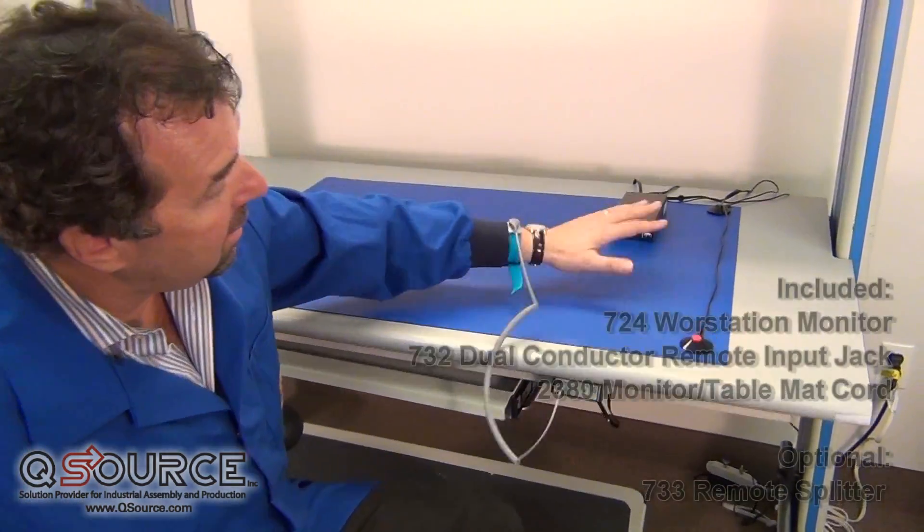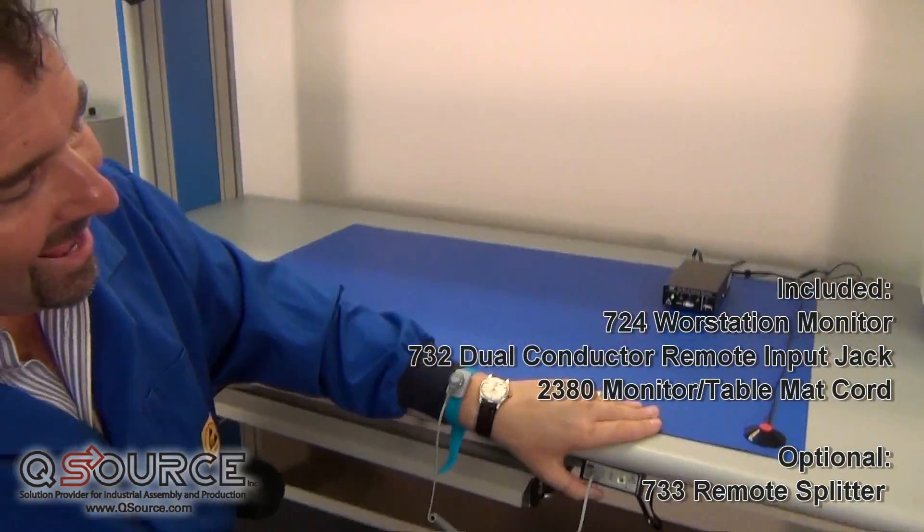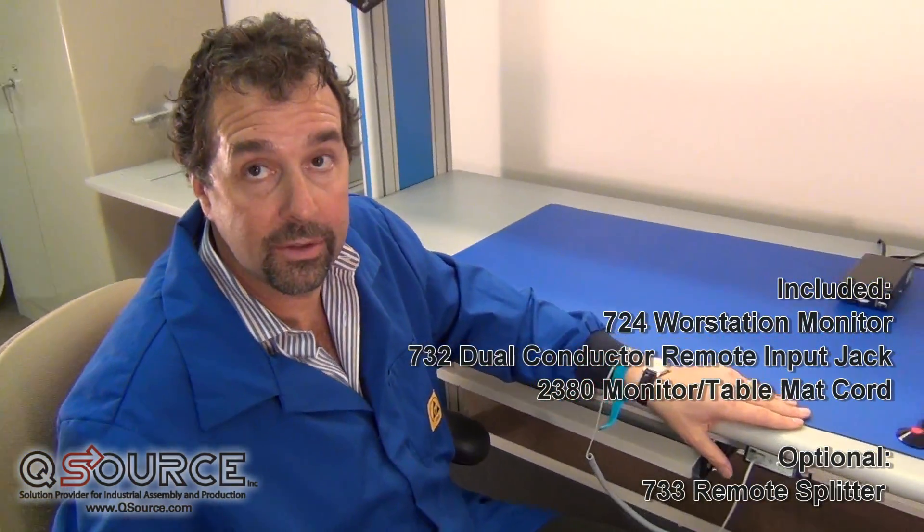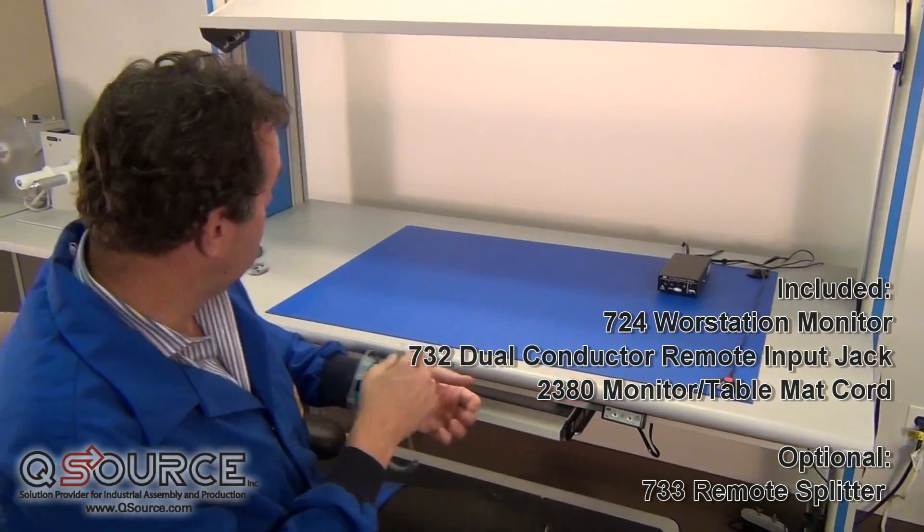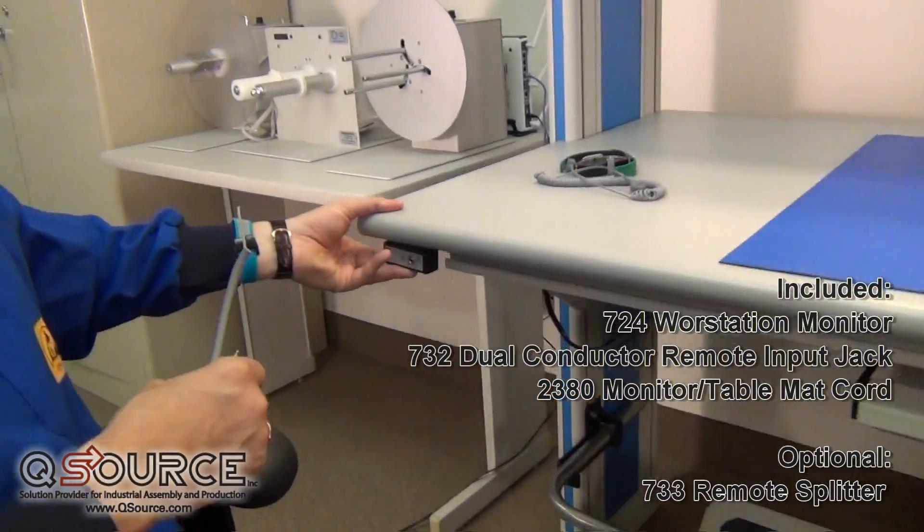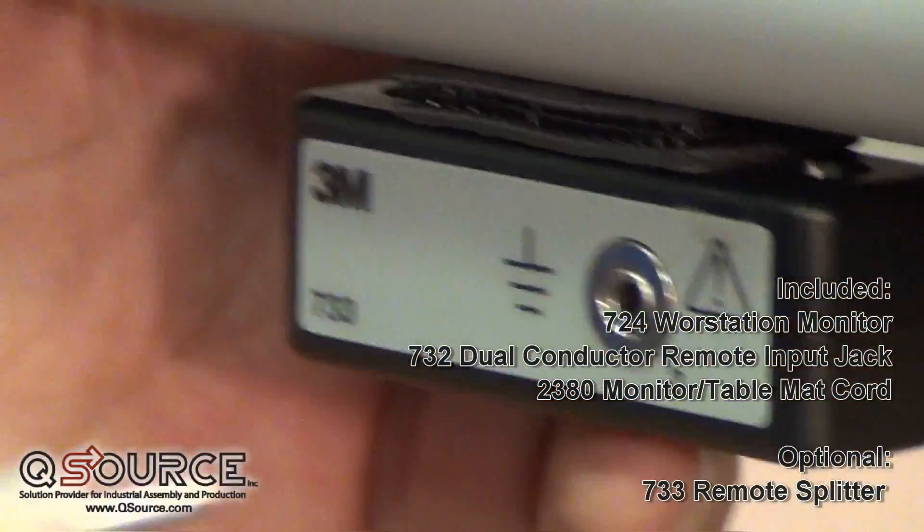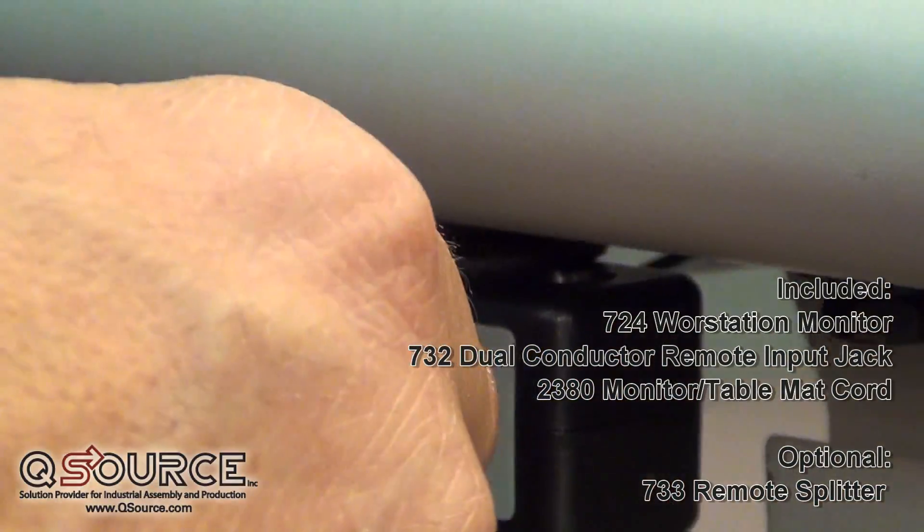Both the monitor ground and the operator jack come with the 724. You can also get an optional 733 remote jack for a second operator, which I can plug in there.